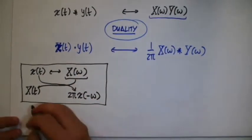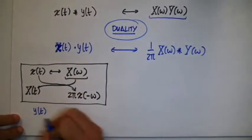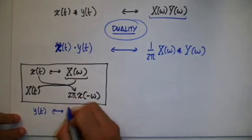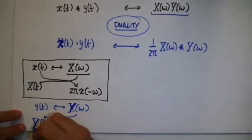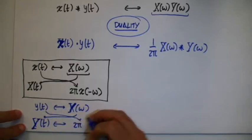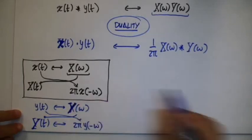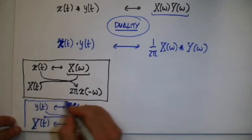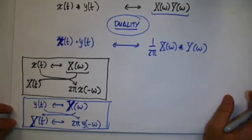Of course, we can do the same for the Fourier transform of y of t, and we're gonna have that capital Y of t will correspond to 2π y of minus omega. And that is the second application of the duality property.